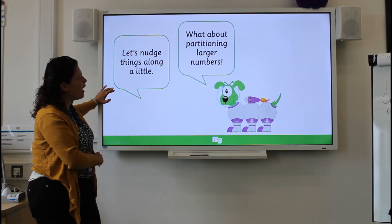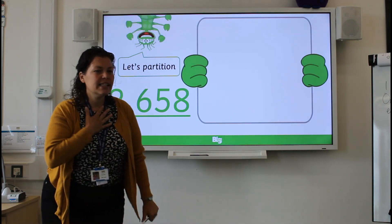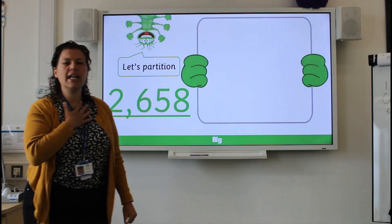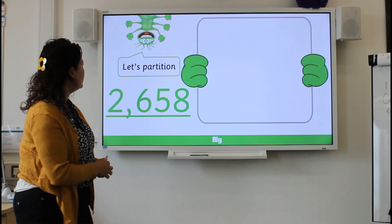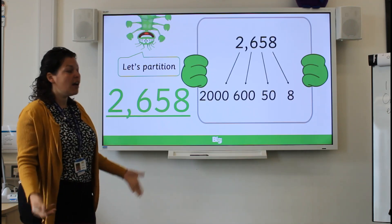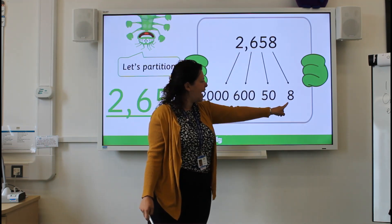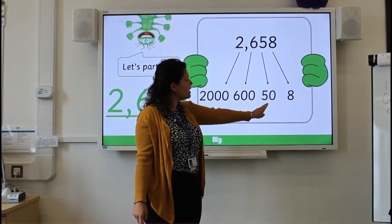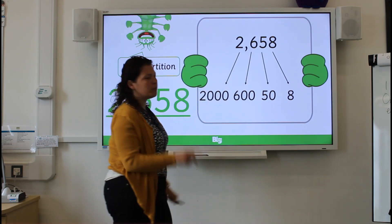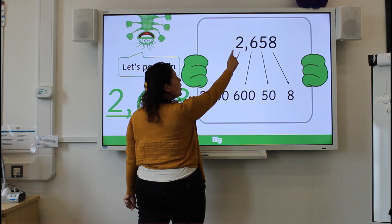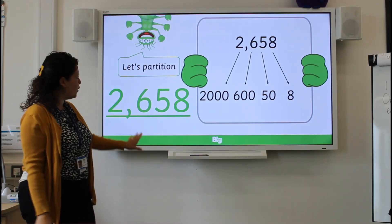Okay, we're going to do a slightly higher number now — we're going to look at four-digit numbers. 2658 — repeat after me: 2658. Well done! How would we partition this? Similarly, we're going to draw the sticks. We've got eight ones, 50 because we have five tens, six hundreds because we've got six lots of one hundred, but this time we've also got two thousand. And there it is!